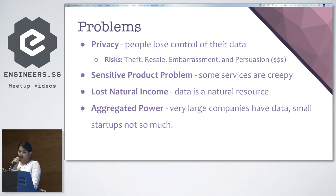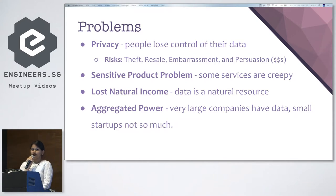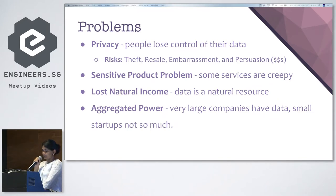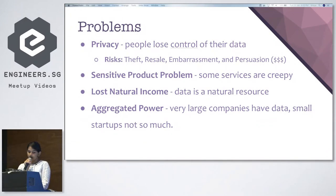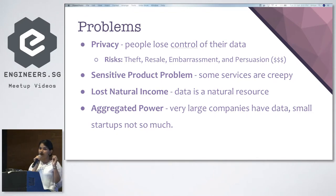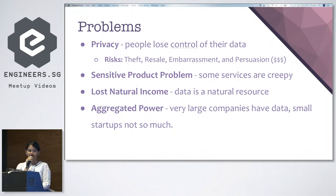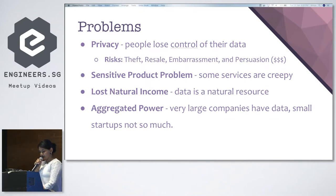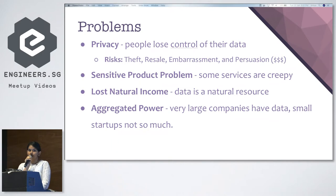The first problem is data privacy. People lose control of their data and this opens them up to a lot of risks — for example, your data could be stolen, it could be resold, it could be revealed to the entire world, and it could even be used as a tool for blackmail. This brings us to the second problem: the sensitive product problem. Some services are inherently creepy — they need you to give up sensitive data such as medical history or mental health information that people are just not comfortable giving up control of. Clearly, where data privacy is an issue, sensitive products will not be possible.